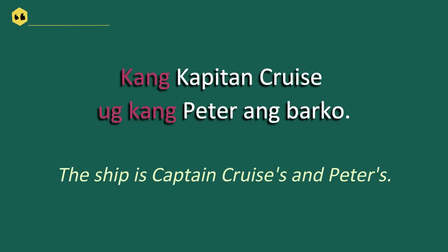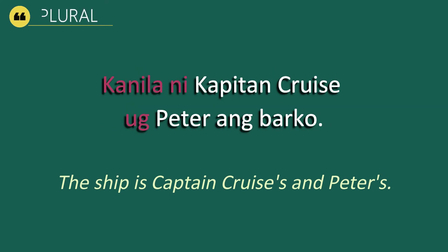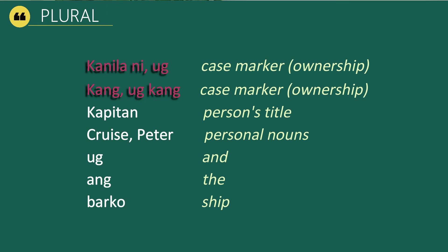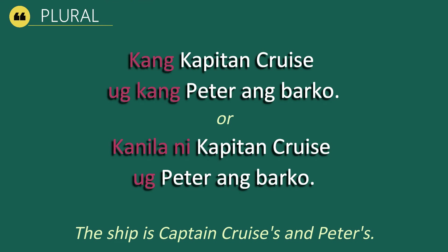Moving on to the plural form: Kang Kapitan Cruz og kang Peter ang barco. Or we can also say Kanila ni Kapitan Cruz og Peter ang barco. Both sentences mean 'The ship is Captain Cruz's and Peter's.' Our case markers are kanila ni and kang og kang. Kapitan is a title, Peter is a person's name, og means 'and,' and barco means ship.